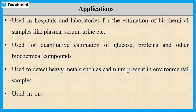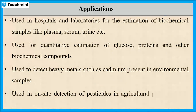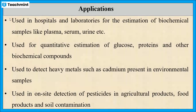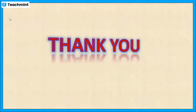Pesticides present in agricultural products, food products, or in soil can also be determined using a colorimeter. These are some of the applications of colorimetric sensors.